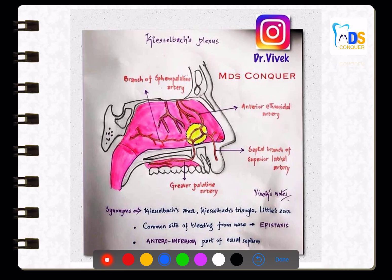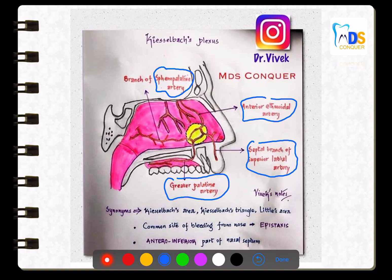There is an area called Kiesselbach's plexus, also called the epistaxis area — it is a common site of bleeding in the lateral wall of nose, located at the antero-inferior part of the nasal septum. The arteries associated with Kiesselbach's plexus are the sphenopalatine artery, anterior ethmoidal artery, greater palatine artery, and the septal branch of the superior labial artery.